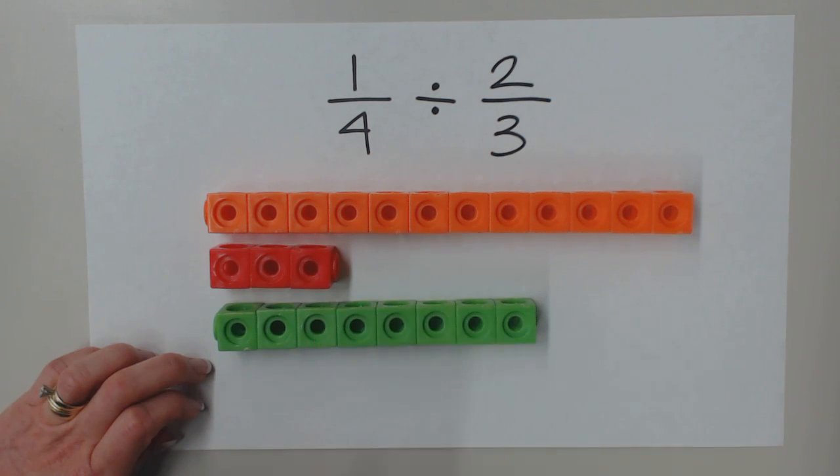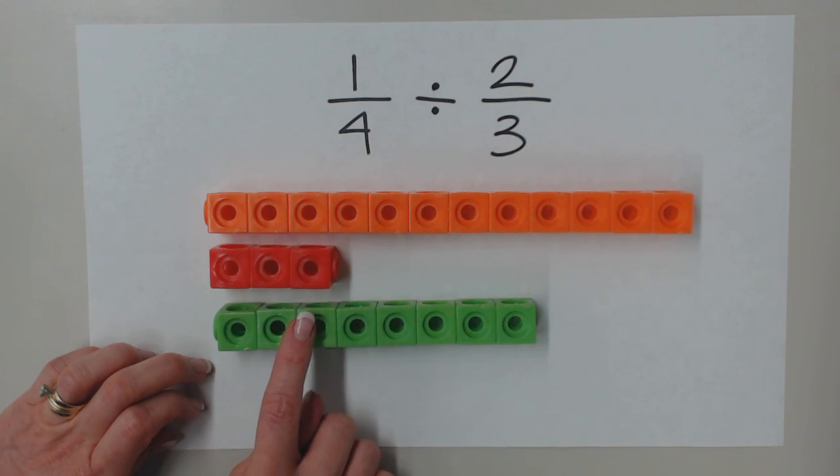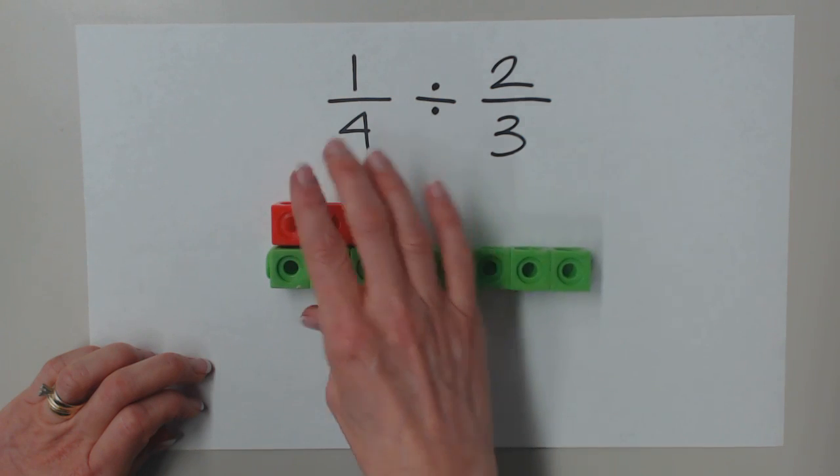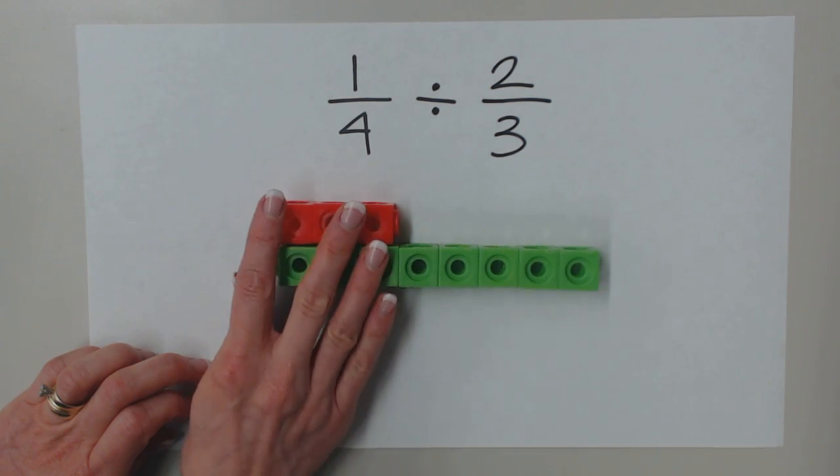So now I have a one-fourth piece and a two-thirds piece, and the question becomes, how much of the two-thirds piece fits into the one-fourth piece?